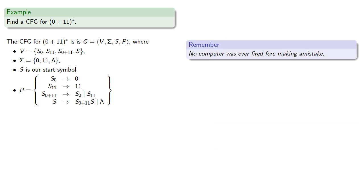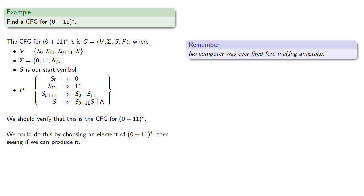Remember: no computer was ever fired for making a mistake. We should verify that this is in fact the context-free grammar for our regular language. We could do this by choosing an element of our language and then seeing if we can produce it — but we'll let you do that.